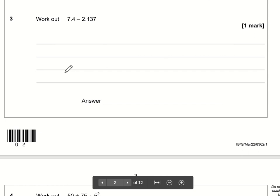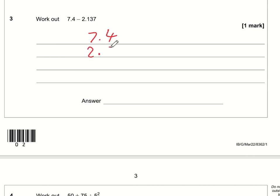Work out 7.4 minus 2.137 so we're going to have to do some column subtraction here. The most important thing is make sure you get your decimal points in line and if they're in line then everything else is in the right place. So the one needs to be underneath the four. Don't try and put the seven underneath the four. So we do have a bit of an issue here because we've got some gaps so we need to fill them with zeros.